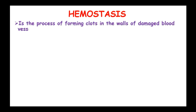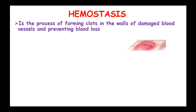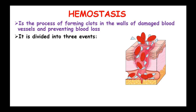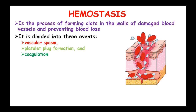Hemostasis is the process of forming clots in the walls of damaged blood vessels and preventing blood loss. Hemostasis can be divided into three events: vascular spasm, platelet plaque formation, and coagulation. Coagulation can also be divided into three pathways: the intrinsic, extrinsic, and the common pathway.